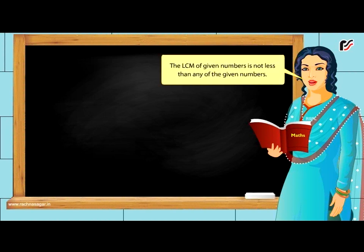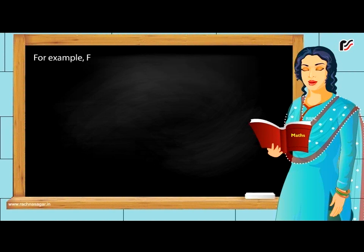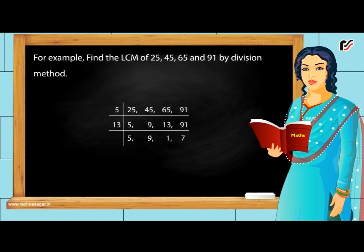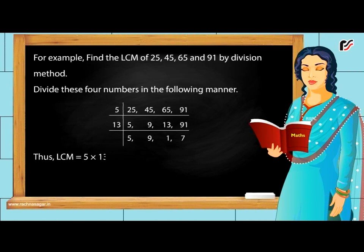The LCM of given numbers is not less than any of the given numbers. For example, find the LCM of 25, 45, 65 and 91 by division method. Divide these four numbers in the following manner. Thus, LCM = 5 × 13 × 5 × 9 × 7 = 20,475.